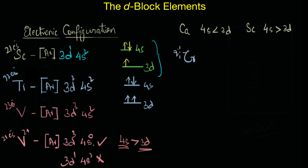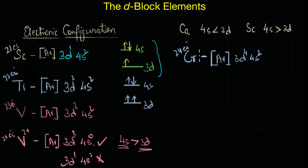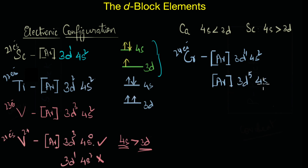Chromium has 24 electrons, and based on what we have studied, its configuration should be [Ar]3d⁴4s². However, this is not what we actually observe experimentally. The electron filling in chromium takes place in such a way that we get a half-filled d configuration: [Ar]3d⁵4s¹. This is argued on the basis that a half-filled electronic configuration offers extra stability.